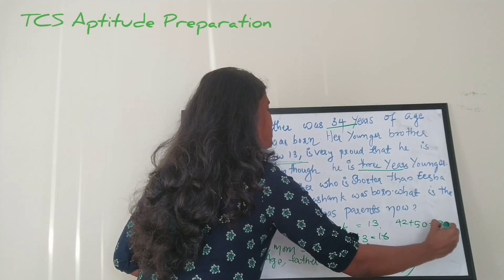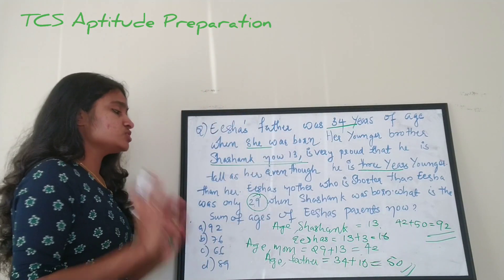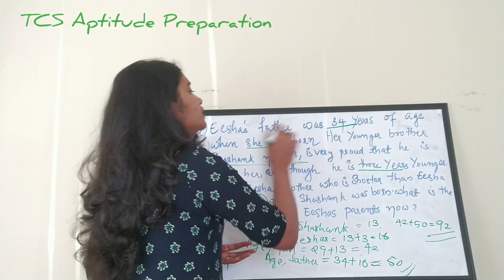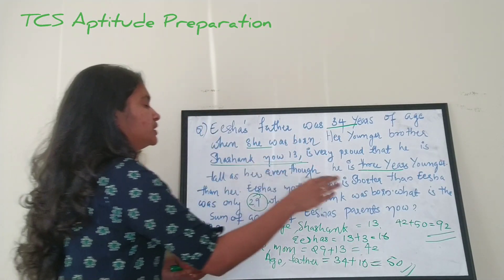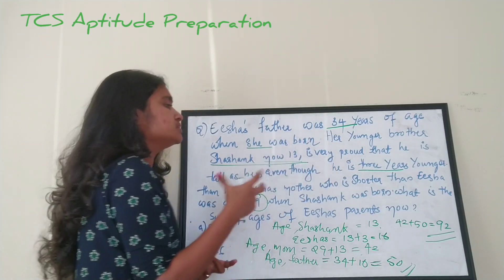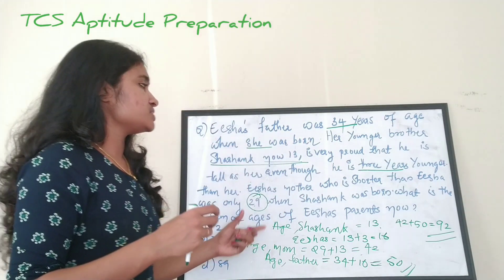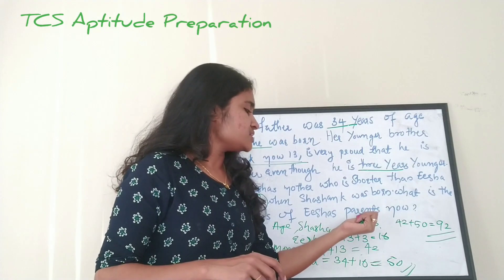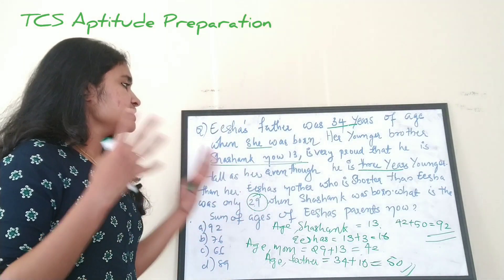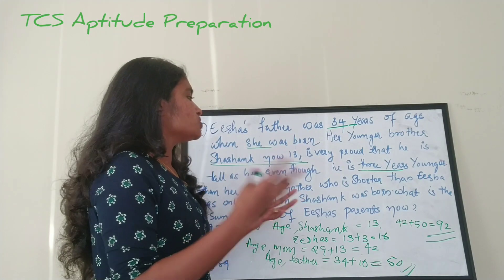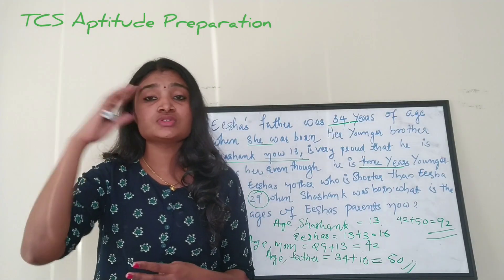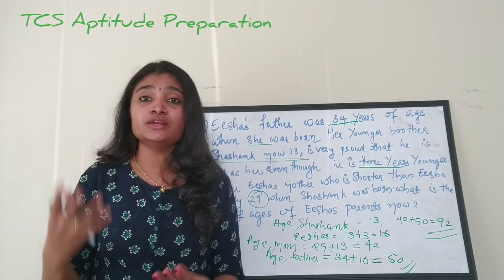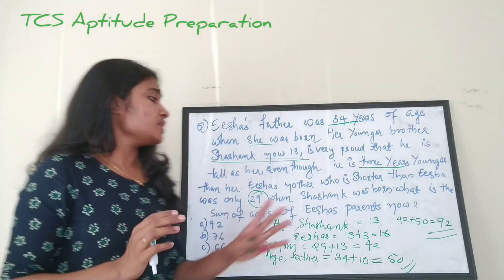The sum of their ages is 42 plus 50, which equals 92. So the answer for this question is 92. When reading the question, try to keep only the relevant data in mind — the age information — and ignore the height or tall/short details. Do the calculation in the minimum number of steps. The answer is option A: 92.